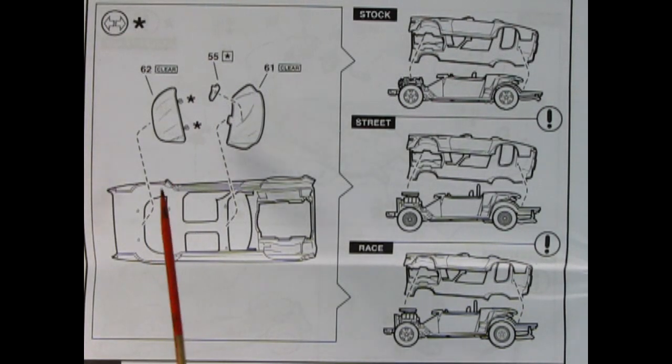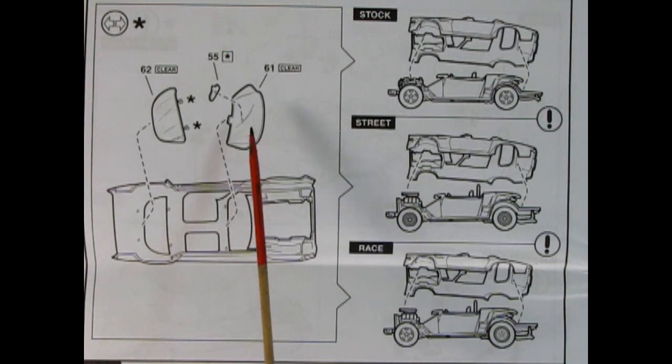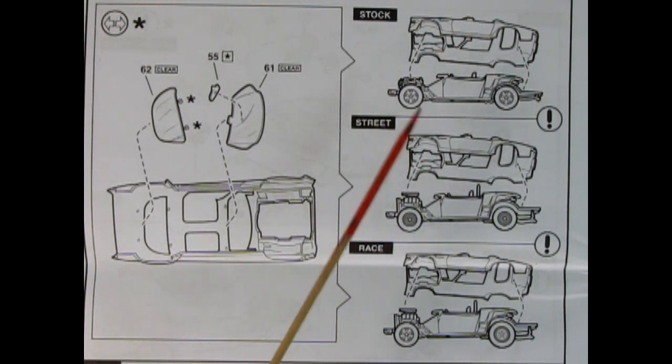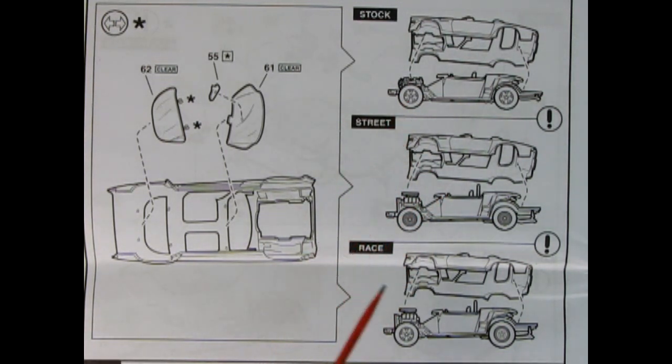Here we have the rear window being glued into place, as well as the front window and our rear view mirror. Then our body drops into place on the stock, street, and race chassis depending on how you built the earlier steps.